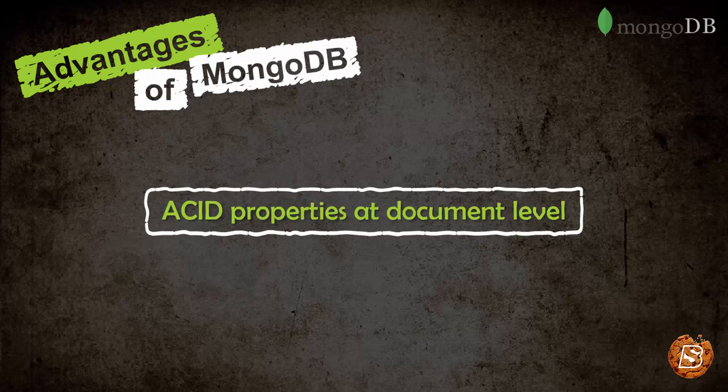We have ACID properties at the document level. ACID stands for Atomicity, Consistency, Isolation, and Durability. These are a set of properties of database transactions.